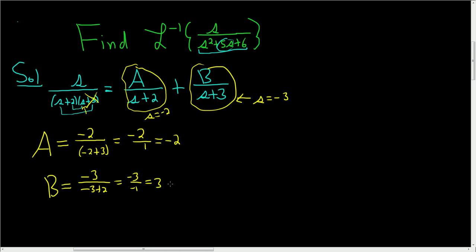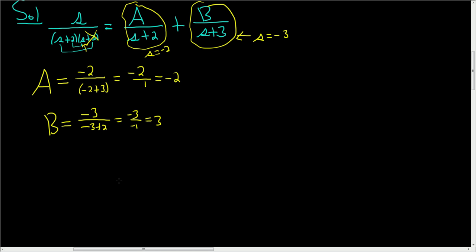And now we are ready to go. So we know that we can rewrite what we have as follows. A here is negative 2, so negative 2 over s plus 2. And b is 3, so 3 over s plus 3.